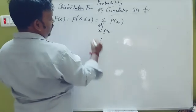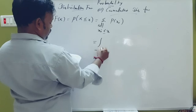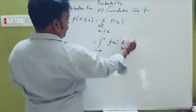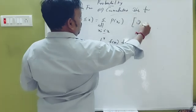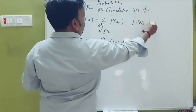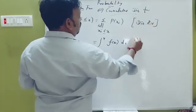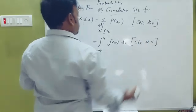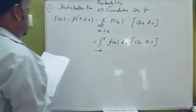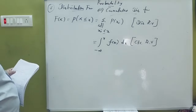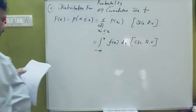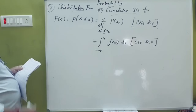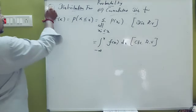For the continuous case, F of x equals the integral from minus infinity to x of f(x) dx. For the discrete case, we use the discrete formula for F of x. Capital F of x is called the distribution function — this is the seventh formula.